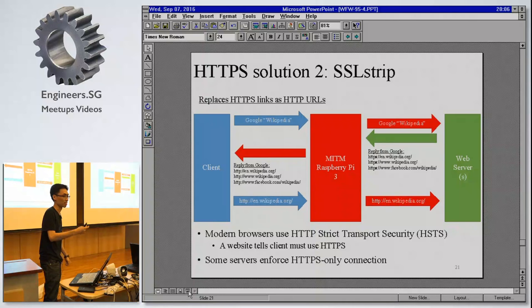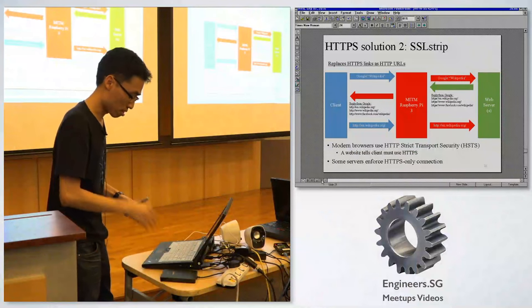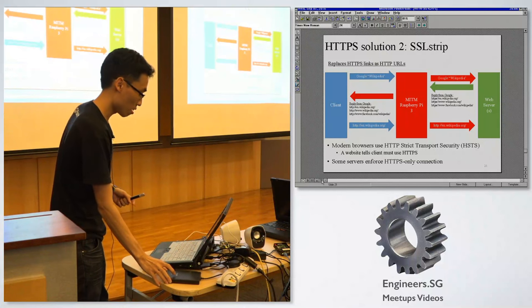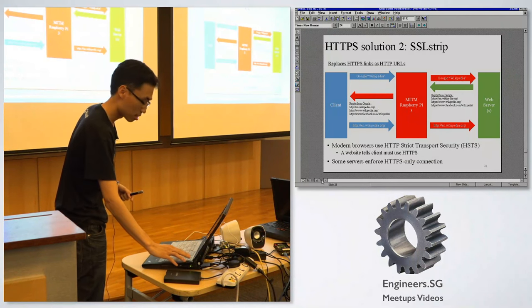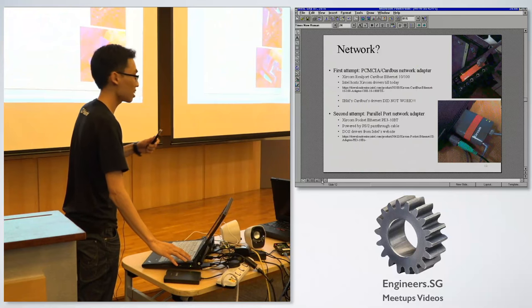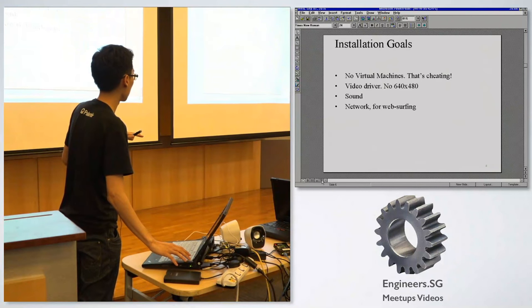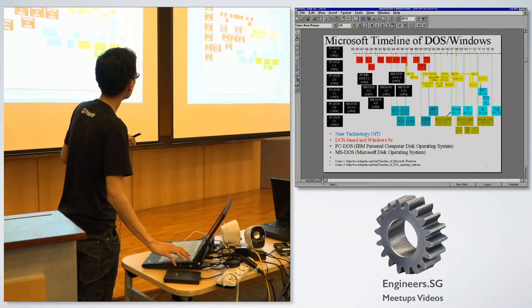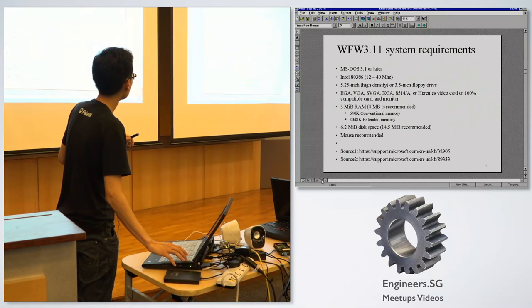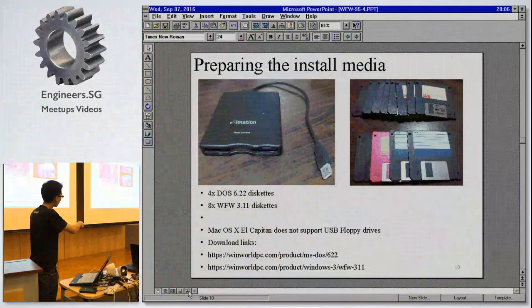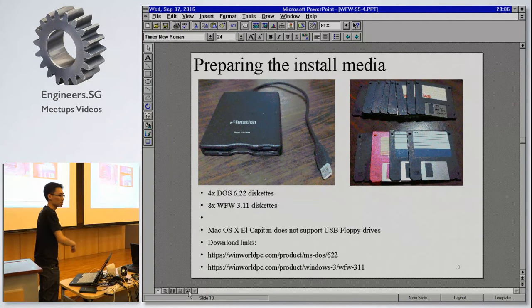Q&A: How did you get the OS image to install? I used a USB floppy drive. Technically it's proprietary software so it's illegal to download, but there's a website — windowspc — that has the DOS and Windows images available.